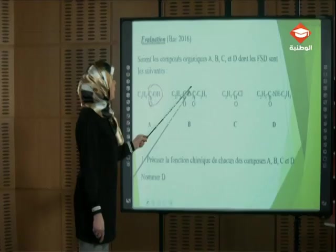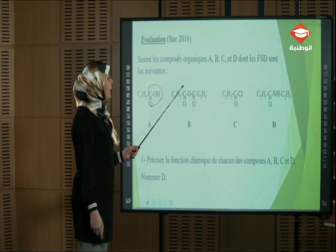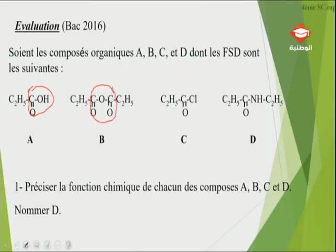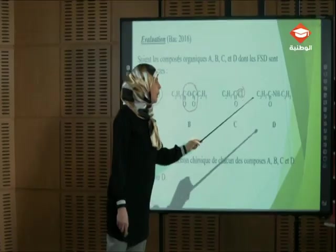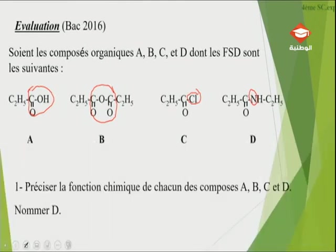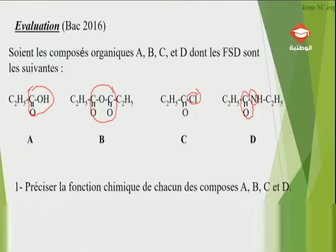Composé B : oxygène au milieu avec deux oxygènes de part et d'autre — c'est un anhydride d'acide. Composé C : on reconnaît le chlore avec doublement lié O — c'est un chlorure d'acide. Composé D : on reconnaît l'azote avec le carbone doublement lié à l'oxygène — c'est la fonction amide. Pour le nom de D : l'azote est substitué par un groupement éthyl, la chaîne carbonée comporte trois carbones (propane), donc D est le N-éthylpropanamide.